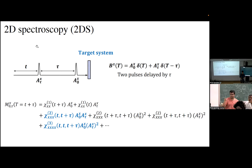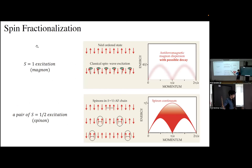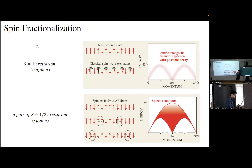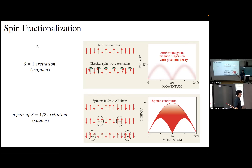A question was raised: what do we mean by spin fractionalization? If we have a spin-1/2 at each site and flip one spin, it changes the total quantum number by one. In a classical system, this creates a coherent spin wave. But in certain quantum systems, the excitation actually splits into two parts that propagate separately throughout the system — each carrying spin-1/2. That separation and independent propagation is what we mean by fractionalization.